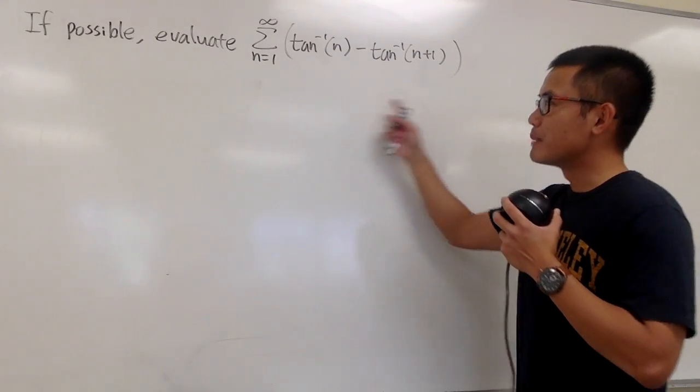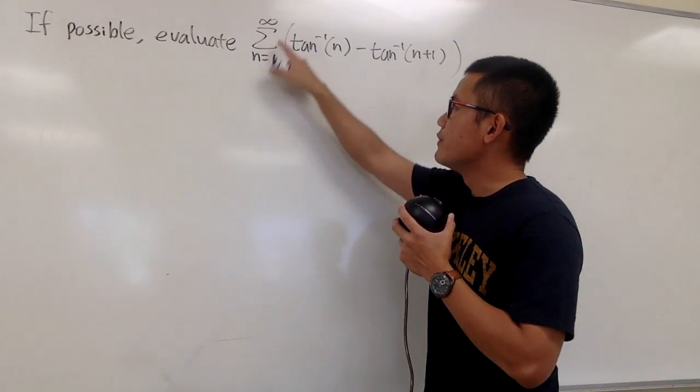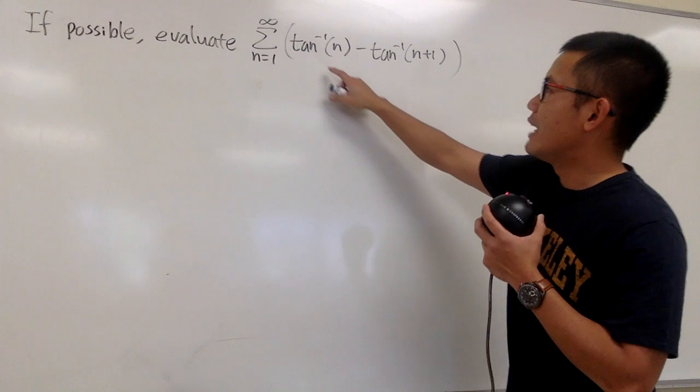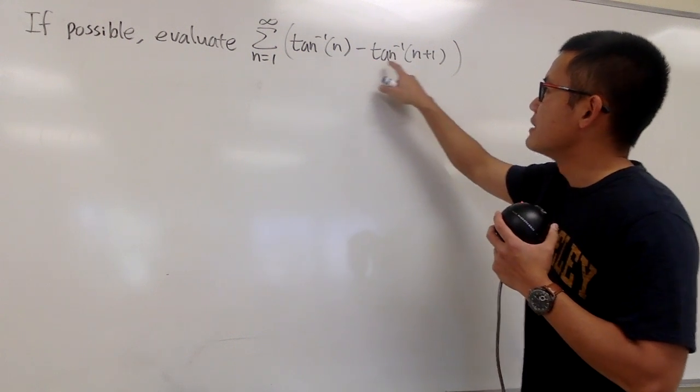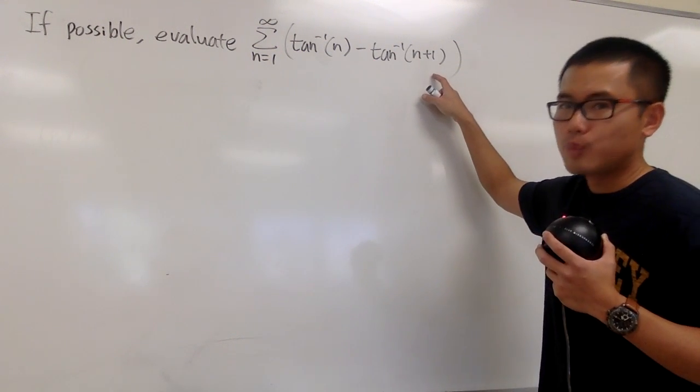Okay, if possible, we are going to find this sum right here, the sum when n goes from 1 to infinity, and inside here we have the inverse tangent of n minus the inverse tangent of n plus 1.